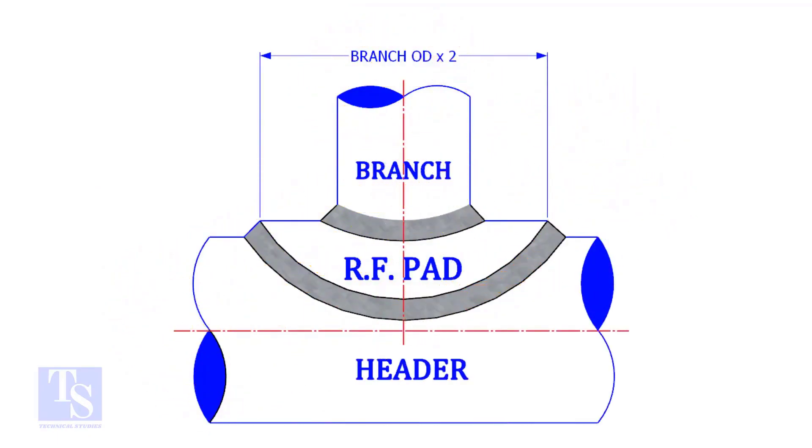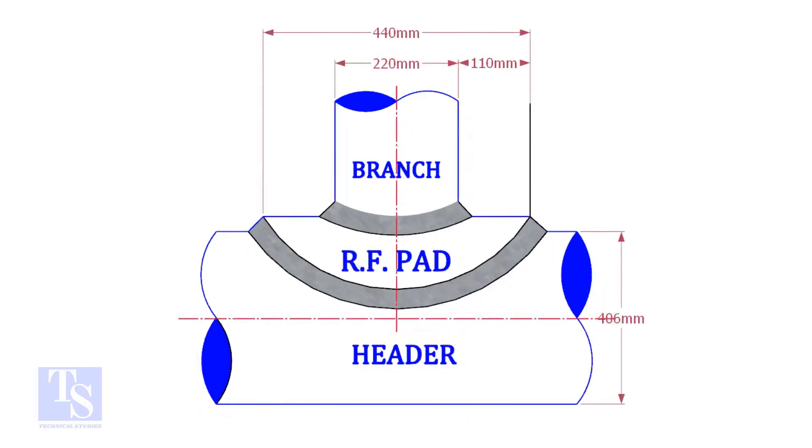Usually, the outer diameter of an RF pad is double the OD of the branch pipe. The OD of our branch pipe is 220 mm, so the outer diameter of our RF pad is 440 mm.